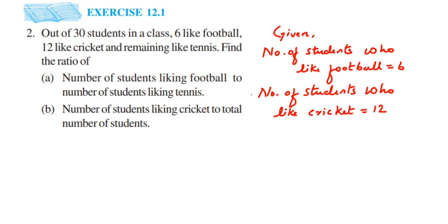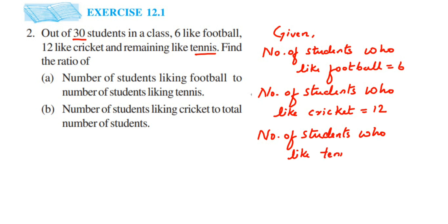We know there are 30 students in the class, so the remaining students who like tennis will be: 30 minus 6 minus 12. That is 30 minus 18, which equals 12. So 12 students like tennis. Now we have all the data.